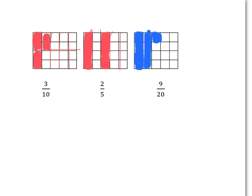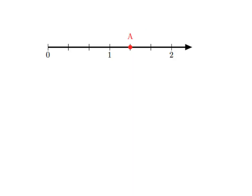So you'd have a picture something like that. If we want to know what point A is on the number line, we can first look and see how many pieces our unit — the gap between zero and one — has been divided up into. We can see it's been divided up into three pieces. So what we're dealing with here on the number line is thirds. How many thirds have we moved when we get to A? We've gone one-third, two-thirds, three-thirds, four-thirds. So A is four-thirds.